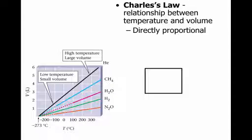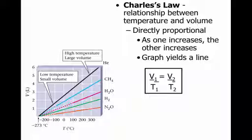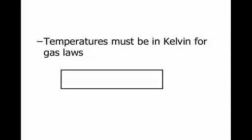Our next law is Charles' law, which looks at the relationship between temperature and volume. These two things are directly proportional — as one increases, the other increases — and this graph would yield a straight line. If you increase the temperature, the volume increases; if you decrease the temperature, the volume decreases. One important thing: when temperature is involved in these gas laws, temperature has to be in Kelvin. So if they give you the temperature in degrees Celsius, you have to add 273 to get to Kelvin.